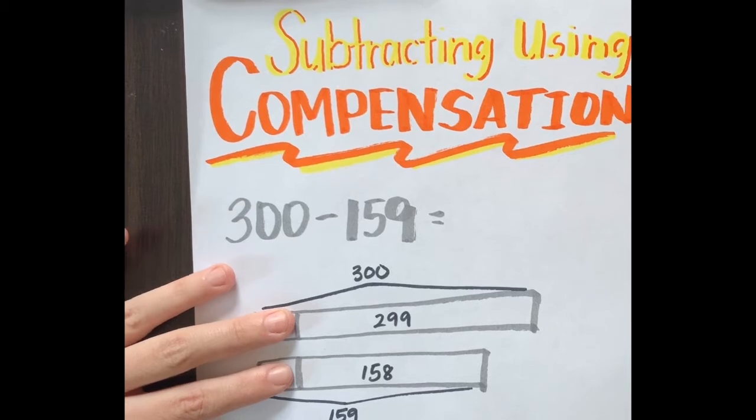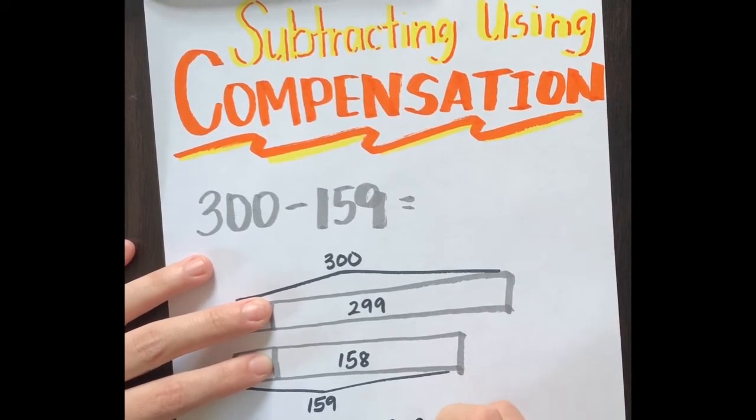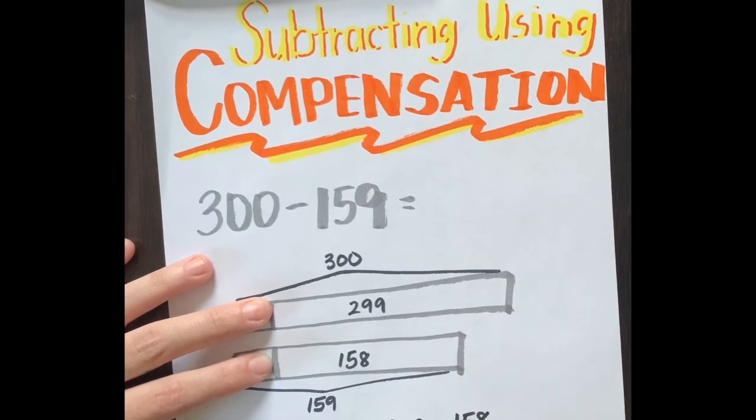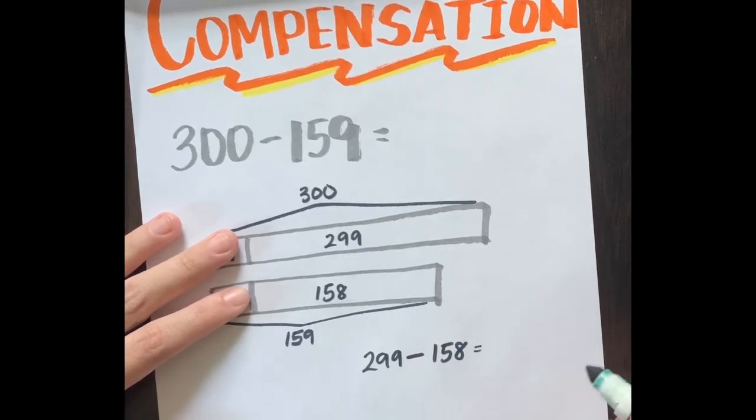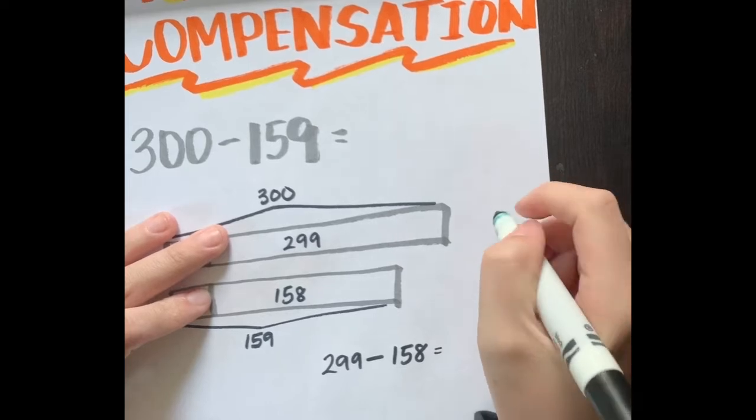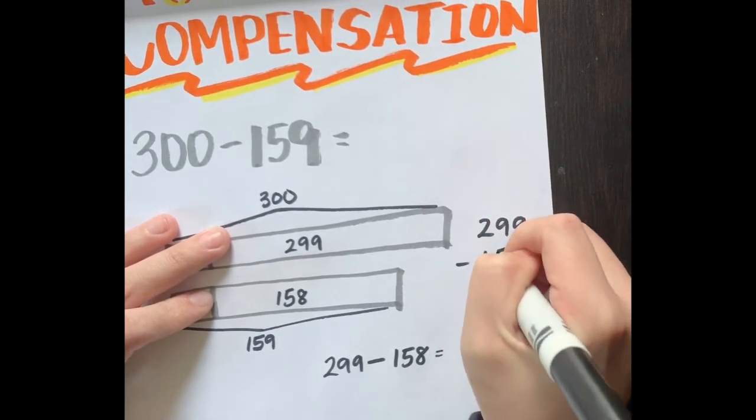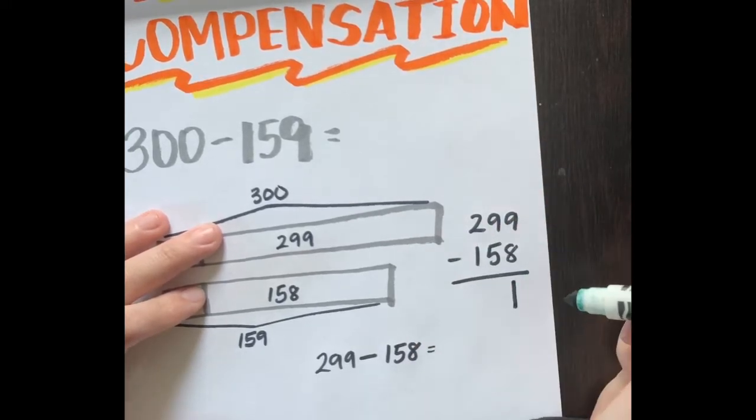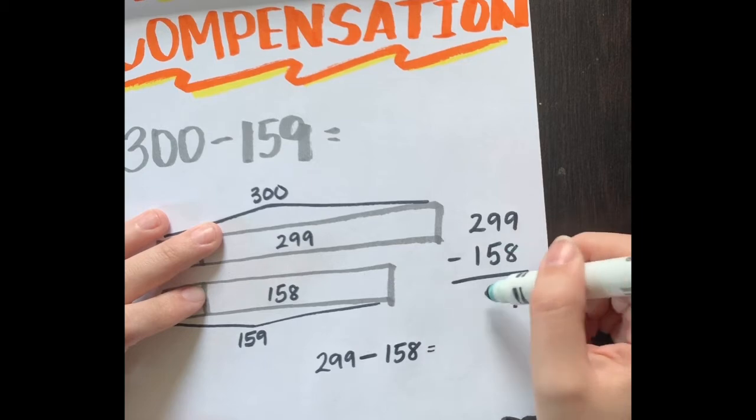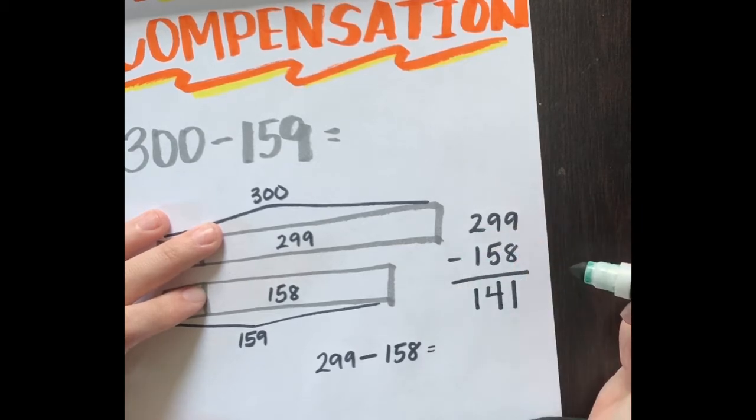These two bits of our tape make our new subtraction problem: 299 minus 158. This is pretty easy to solve. I'll write it vertically and solve: 9 minus 8 is 1, 9 minus 5 is 4, 2 minus 1 is 1, so 299 minus 158 is 141.